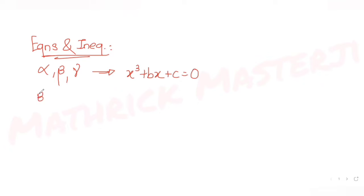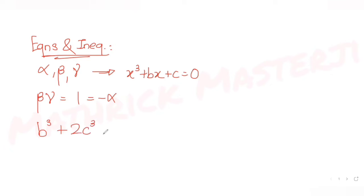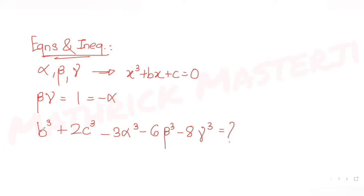Further, it is telling us the product of beta and gamma is one, which is also equal to minus alpha. The question is asking us to figure out the value of the expression: b cubed plus two c cubed minus three alpha cubed minus six beta cubed minus eight gamma cubed.